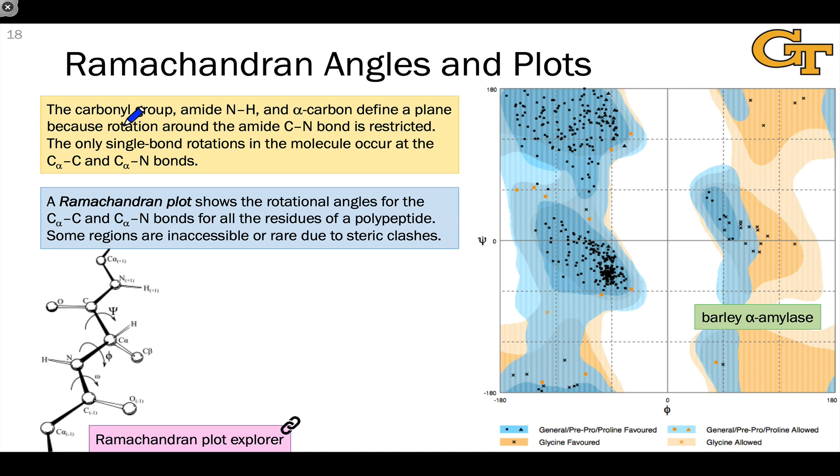One way to think about the complex three-dimensional structure of a protein is as a sequence of dihedral angles between different bonds within the polypeptide backbone. This actually isn't as complicated as it sounds because there is restricted rotation about the CN bond in the amide.